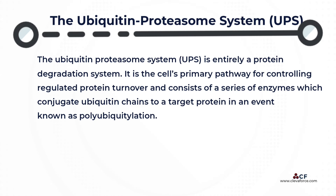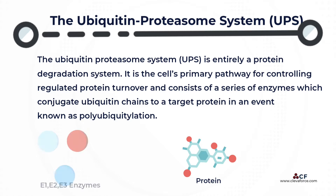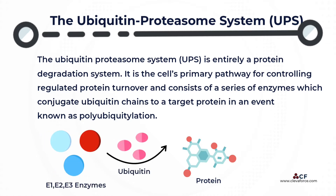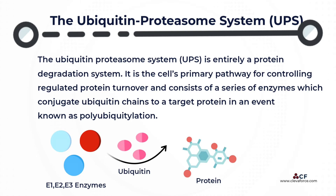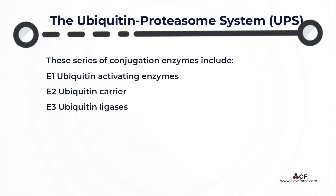The ubiquitin proteasome system (UPS) is entirely a protein degradation system. It is the cell's primary pathway for controlling regulated protein turnover and consists of a series of enzymes which conjugate ubiquitin chains to a target protein in an event known as polyubiquitylation. These conjugation enzymes include E1 ubiquitin activating enzymes, E2 ubiquitin carrier or conjugating enzymes, and